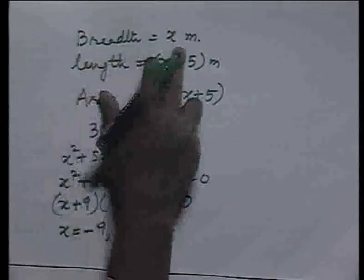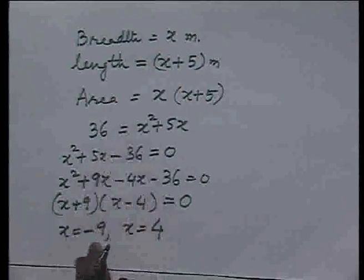Since x is the breadth of the rectangle, it cannot be negative. So we rule out x = -9, and we are left with the solution x = 4 meters. Now, before ending this lesson, let us have a quick recapitulation. We learnt to solve problems which were not of quadratic form but can be reduced to quadratic form by simple manipulations. We also saw the utilization of quadratic equations in day-to-day life. Thank you.